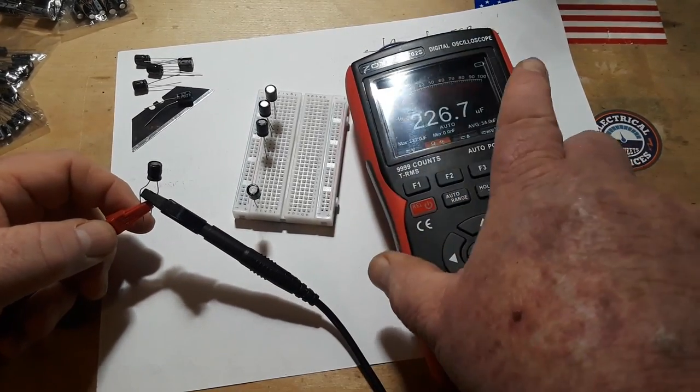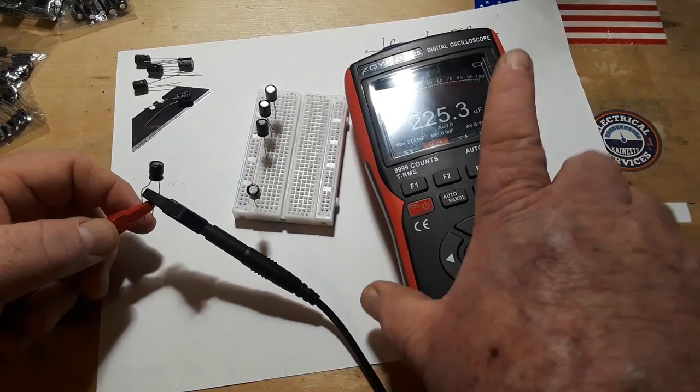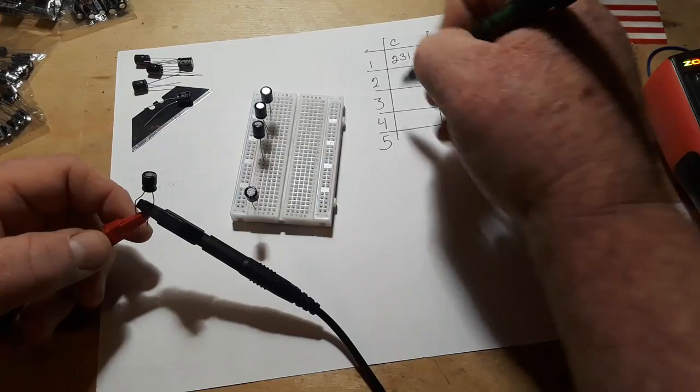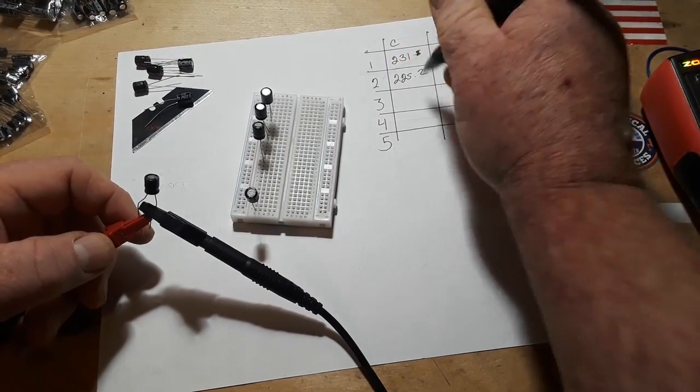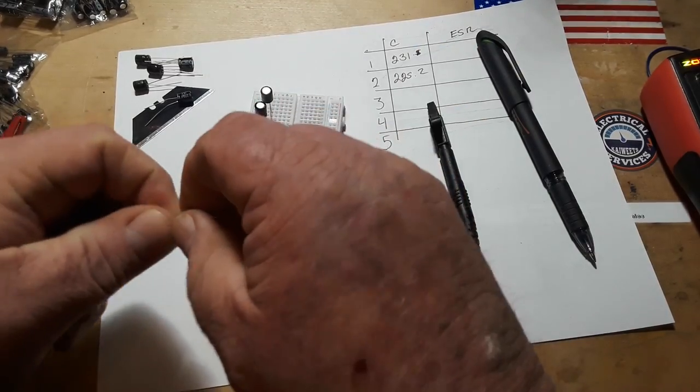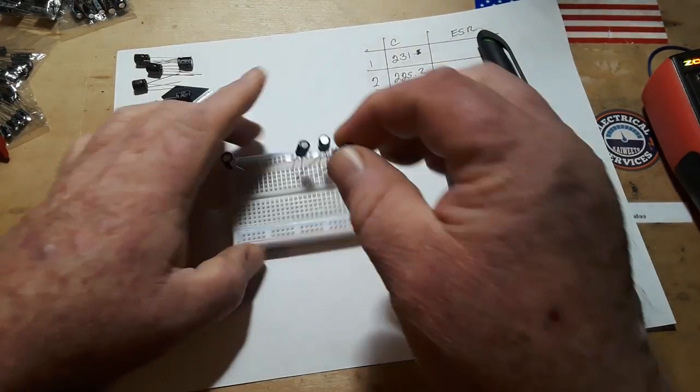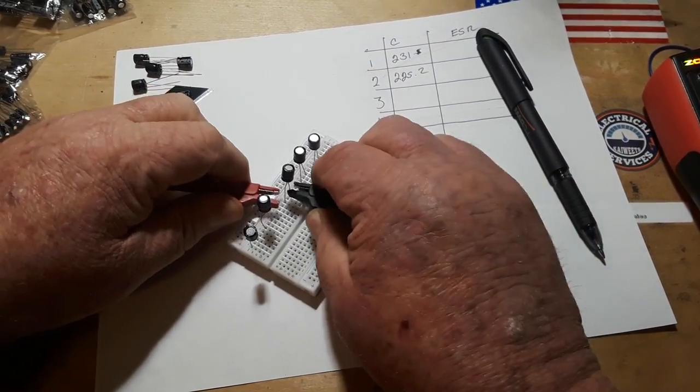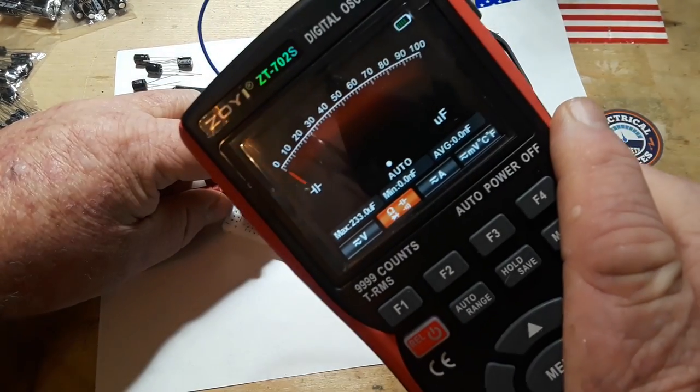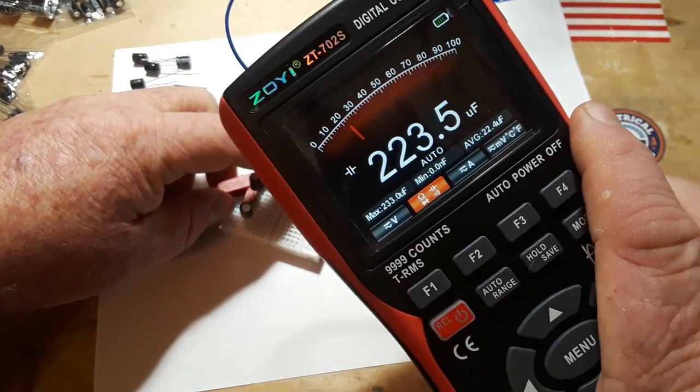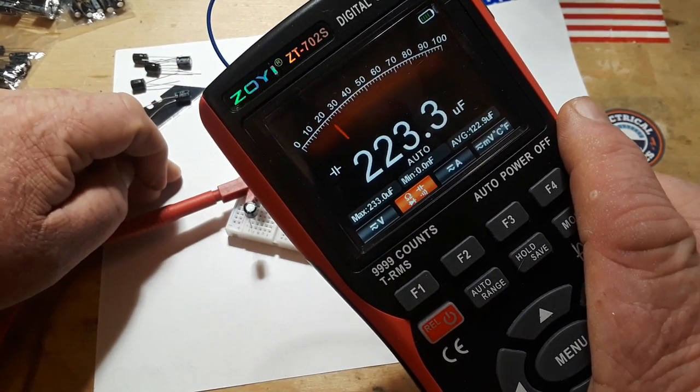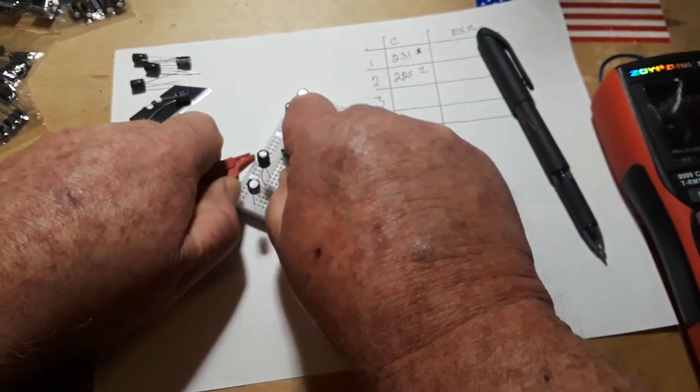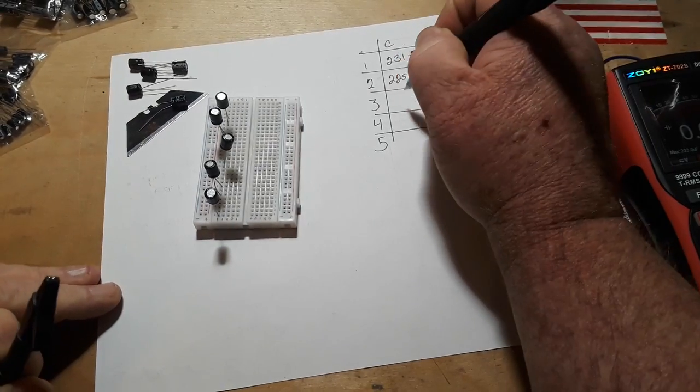Next up. 225.2. I'm going to put them back in here just so we keep them in order. Next one. I was thinking about it. 222.7. These are surprisingly all pretty good.